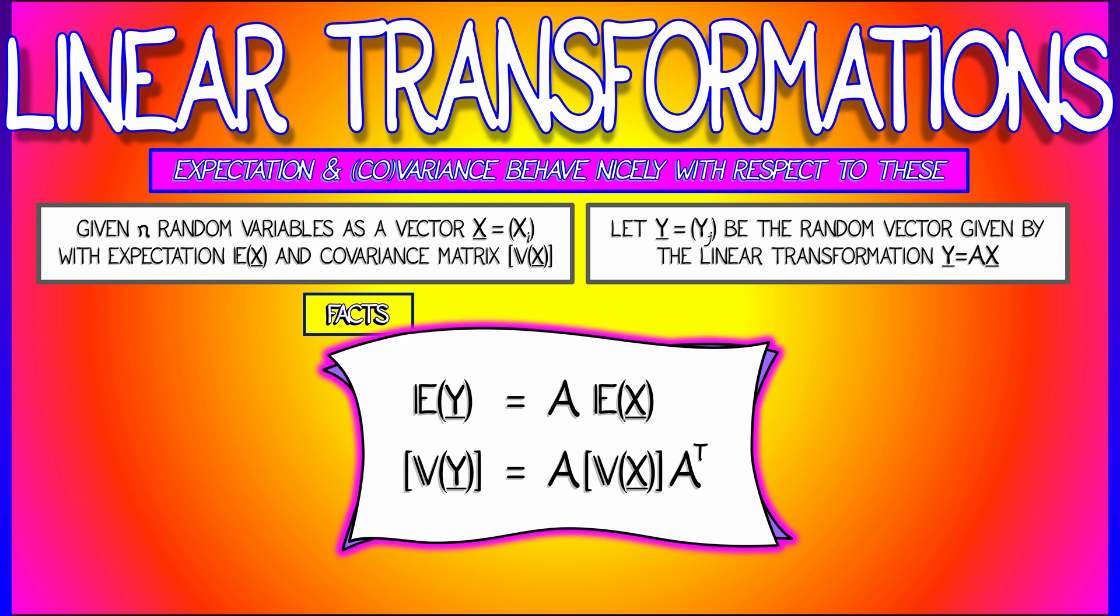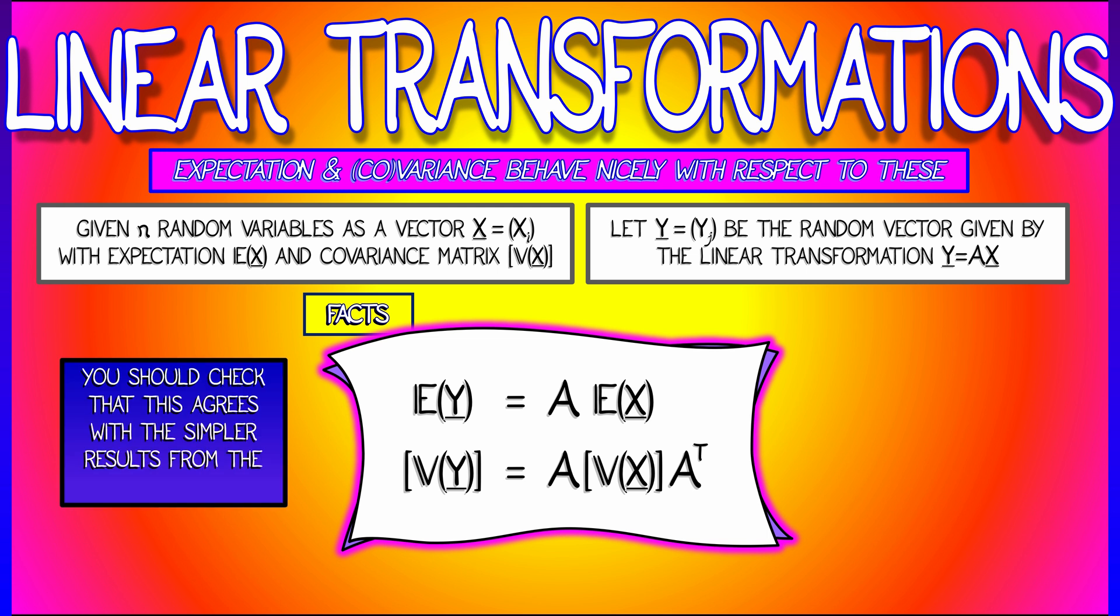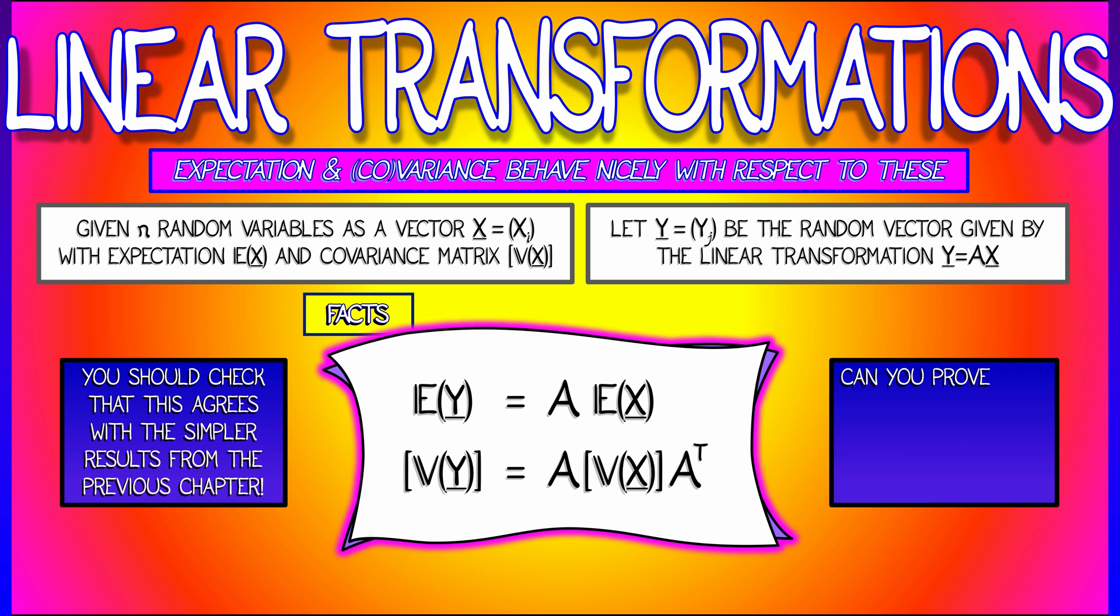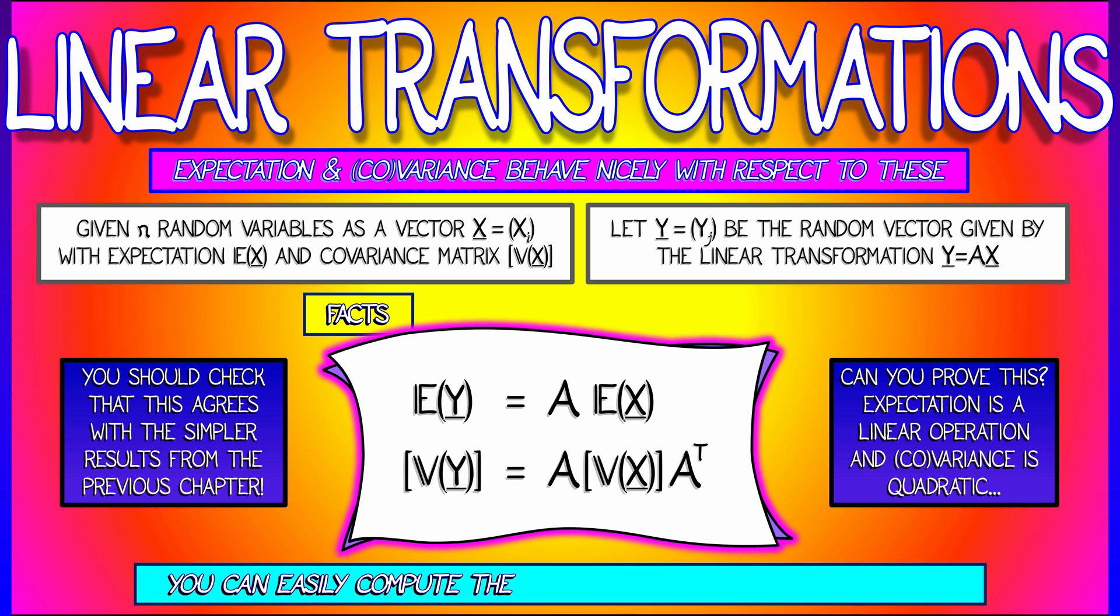Now you should check that this makes sense and agrees with the simpler results when we just add two random variables, where we showed that expectation was linear in that combination and covariance was quadratic when you start changing random variables. This is what that looks like when you're in arbitrary dimensions. Now, you could prove this. We're not going to do so.